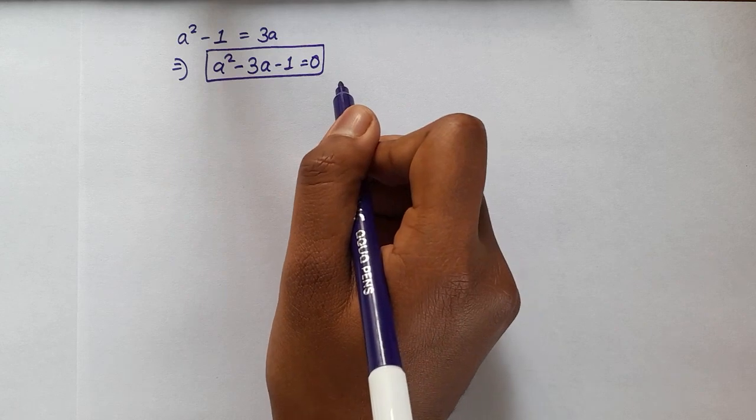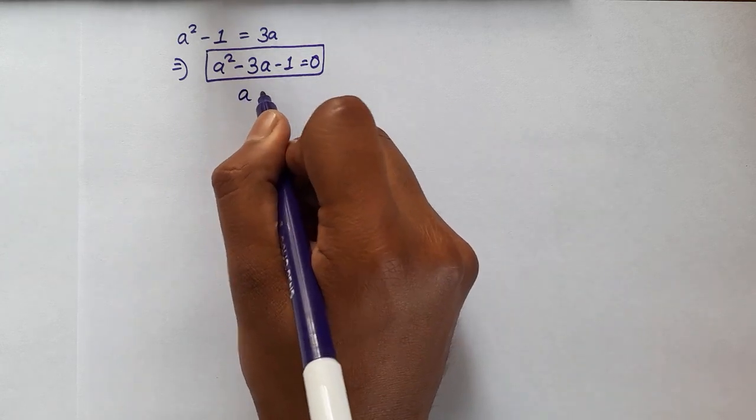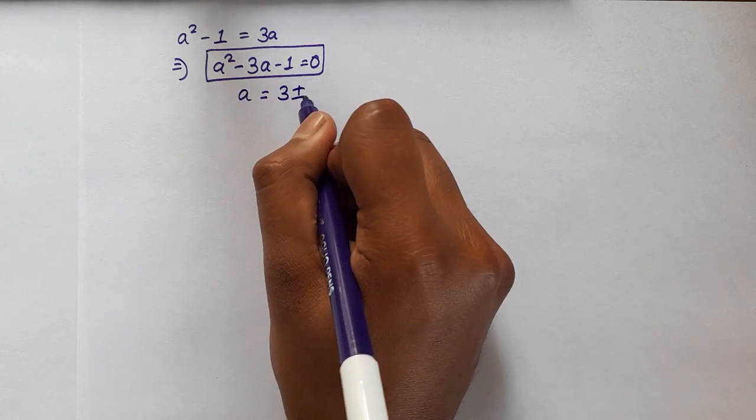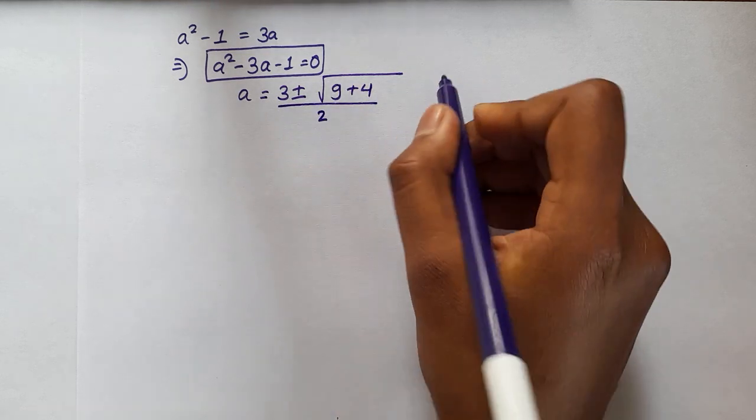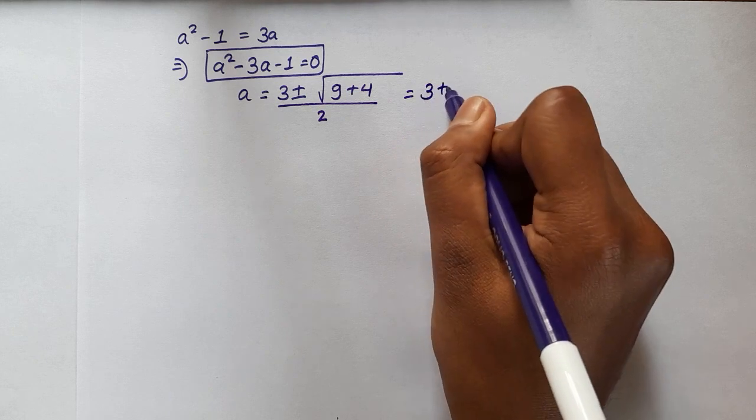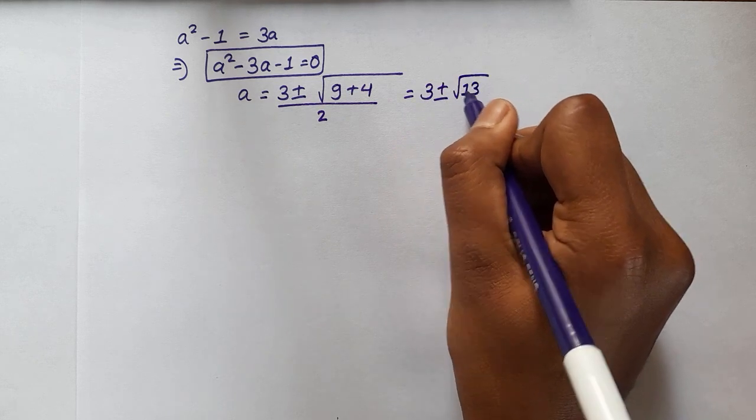So we can use the quadratic formula to calculate the value of a. So a will be equal to minus b plus minus under root b squared minus 4ac divided by 2a. This gives us 3 plus minus root 13 over 2.